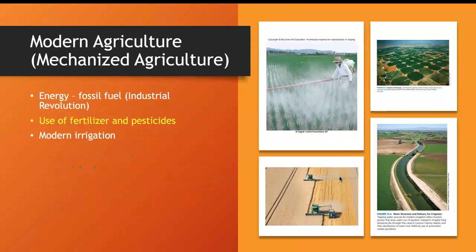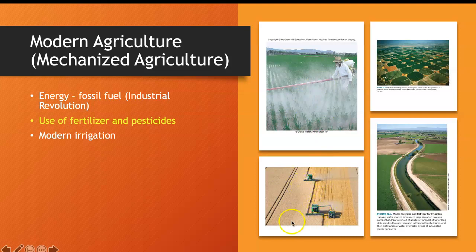In modern agriculture we use tons of chemicals, for example the pesticides shown here. Machines can do a great deal for us, but you can see all the fields are one kind of crop — there's no biodiversity, and that invites pest problems.